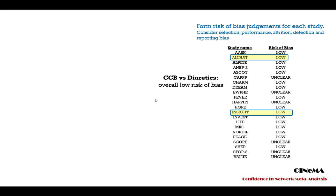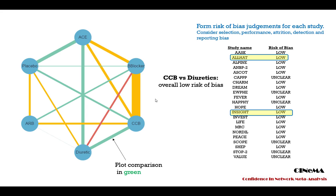Study-level risk of bias judgments are summarized within each treatment comparison to form a judgment about direct evidence. For example, there are two studies that compare CCB versus diuretics, both at low risk of bias. So we would characterize the direct comparison as pertaining to low risk of bias altogether. These judgments can be shown in the network plot.